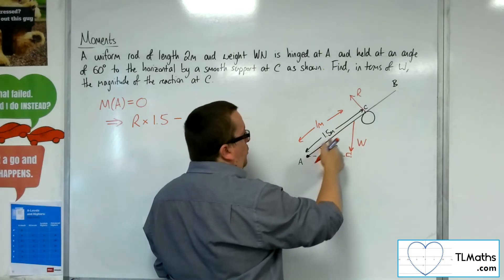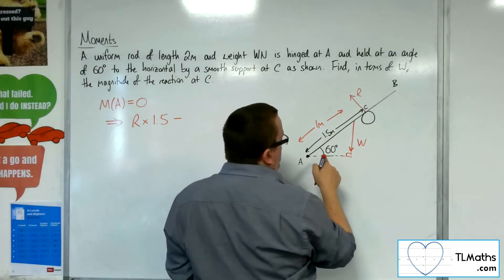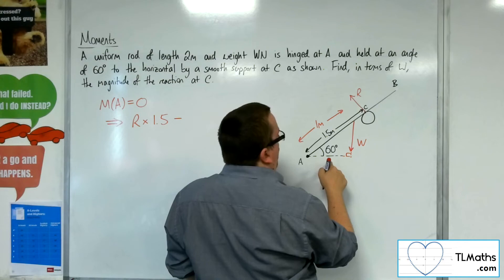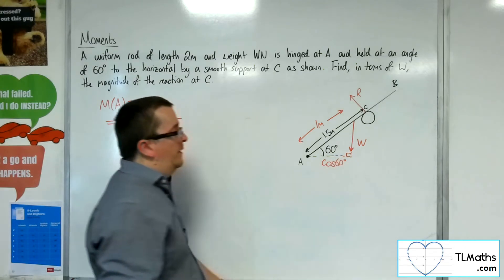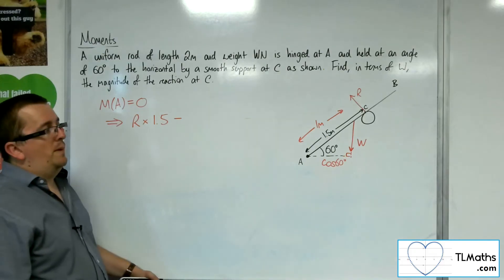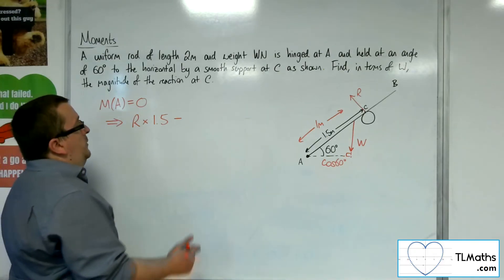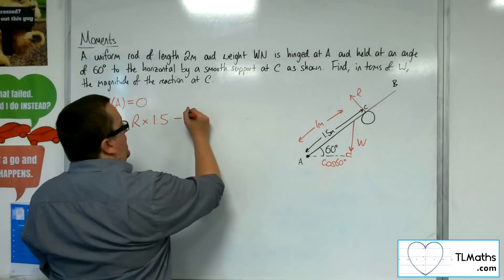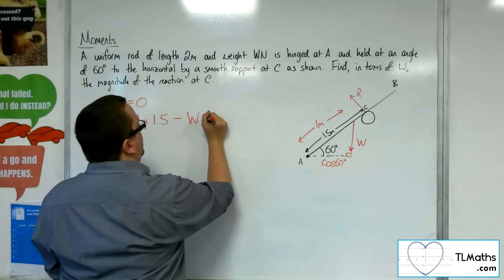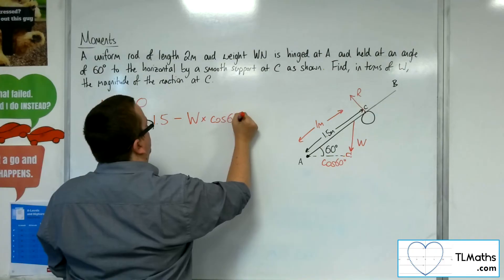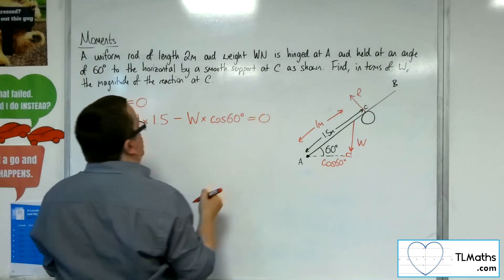Now, this length is 1 metre, so this is 1 lot of cosine 60. That is the distance from A to the force. So we've got the force in question, W, times cosine of 60. And that's got to be equal to 0.